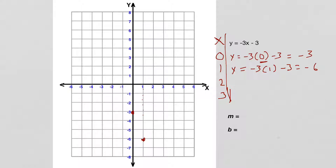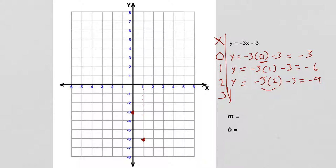What happens if I try x = 2? Minus 3 times 2 is minus 6, and minus 6 minus 3 equals negative 9. Negative 9 doesn't fit on my graph. But for x = 2, the point would be way down there somewhere — I'm going to estimate it's right about there.